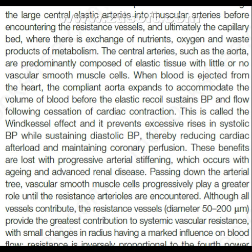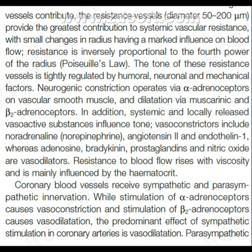These benefits are lost with progressive arterial stiffening, which occurs with aging and advanced renal disease. Passing down the arterial tree, vascular smooth muscle cells progressively play a greater role until the resistant arterioles are encountered. Although all vessels contribute, the resistant vessels — bus diameter 50 to 200 micrometers — provide the greatest contribution to systemic vascular resistance, with small changes in radius having a marked influence on blood flow. Resistance is inversely proportional to the fourth power of the radius. The tone of these resistance vessels is tightly regulated by humoral, neuronal and mechanical factors.